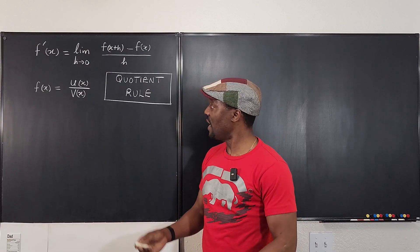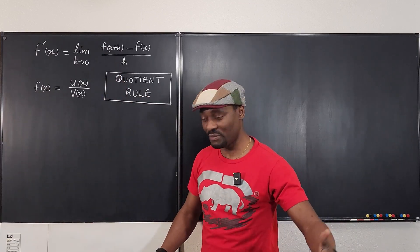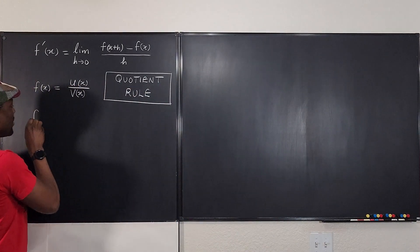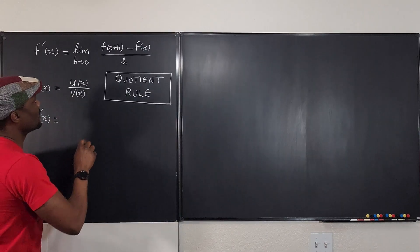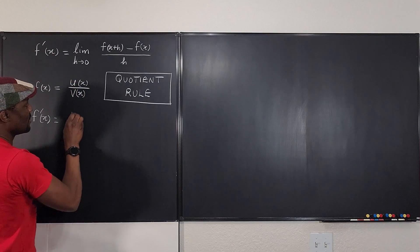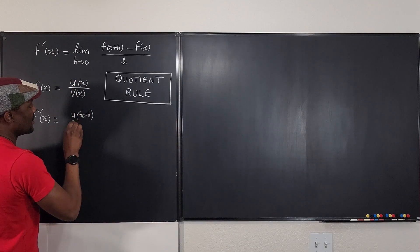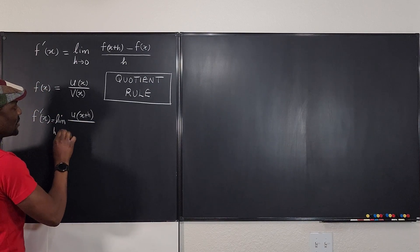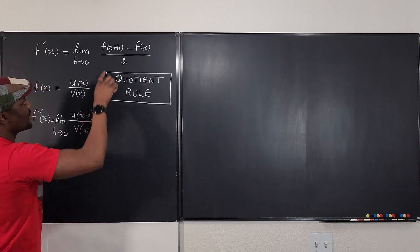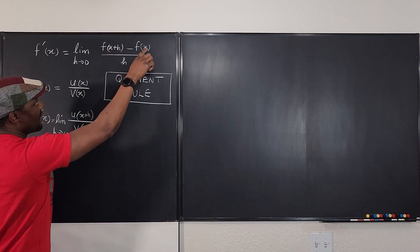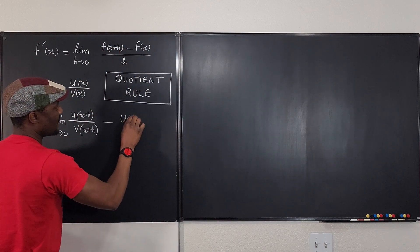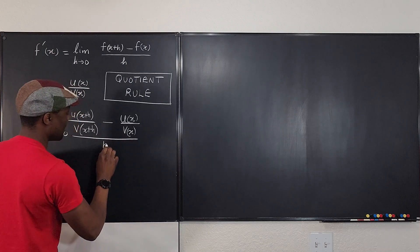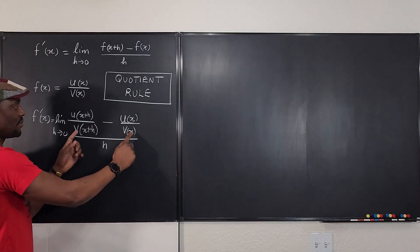The first thing we're going to do is follow the same procedure we do for all differentiation from first principles, which is using the definition of the derivative. So f prime of x will be equal to the limit as h goes to zero of f of x plus h — which is u of x plus h divided by v of x plus h — minus f of x, which is u of x divided by v of x, all divided by h.